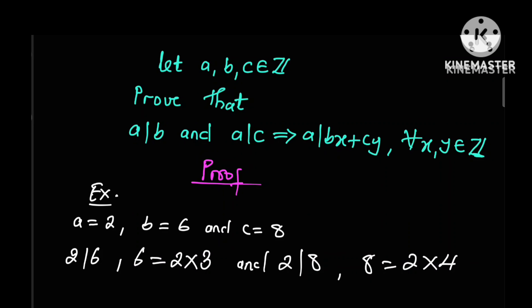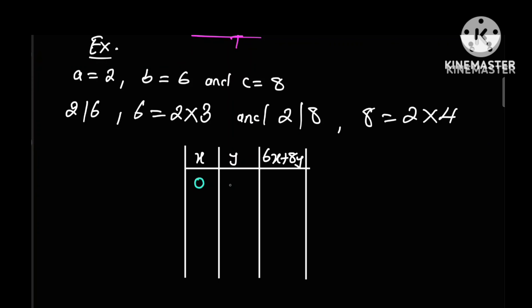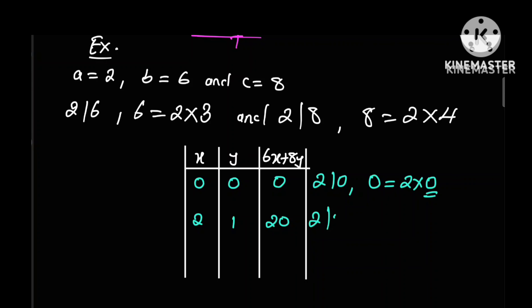Now let's verify that 2 can divide any possible combination of 6 and 8. If x is 0 and y is also 0, then 6x plus 8y will also be 0, and we know that 2 divides 0 since 0 can be expressed as 2 times 0, where this 0 is an integer. If x is 2 and y is 1, then 6x plus 8y will be 12 plus 8, which is equal to 20, and we also know that 2 divides 20 since 20 can be written as 2 times 10, where 10 is an integer.